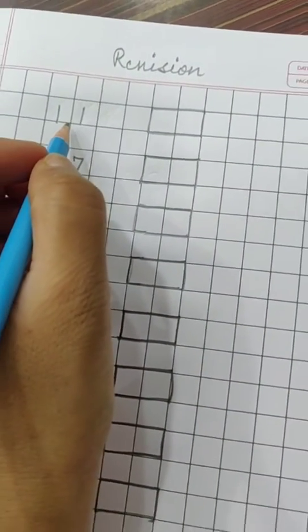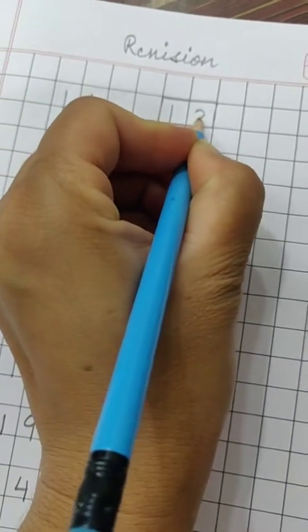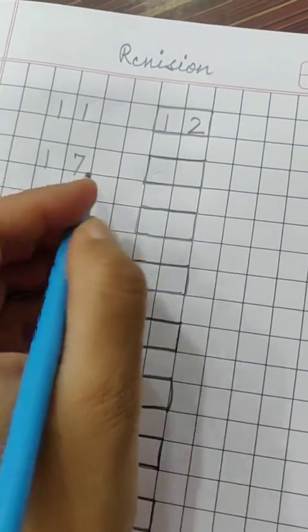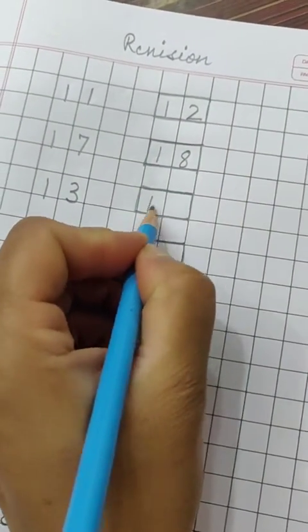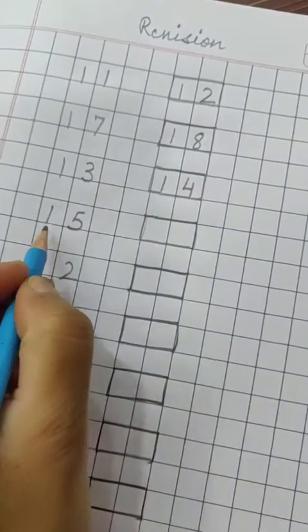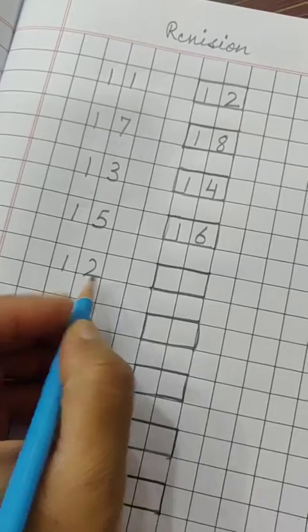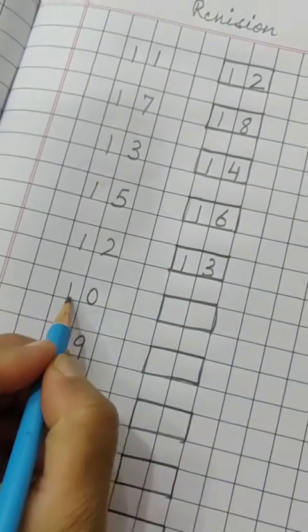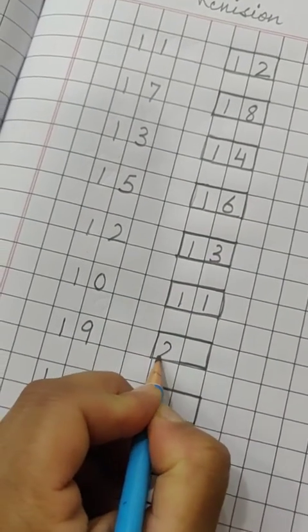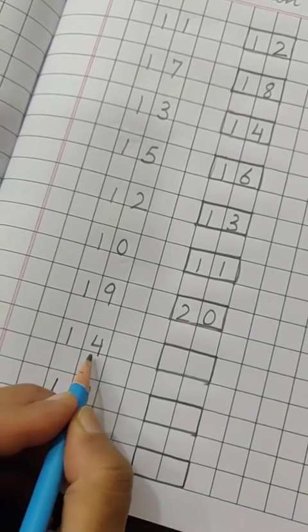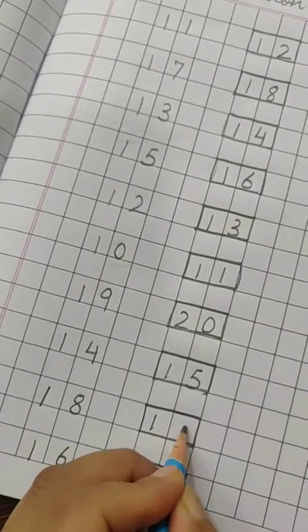Now here is 11. What is written here? 11. What happens after 11? 12. 17. What happens after? 18. 13, 14, 15, 16, 12, 13, 10, 11, 19, 20, 14, 15, 18, 19.